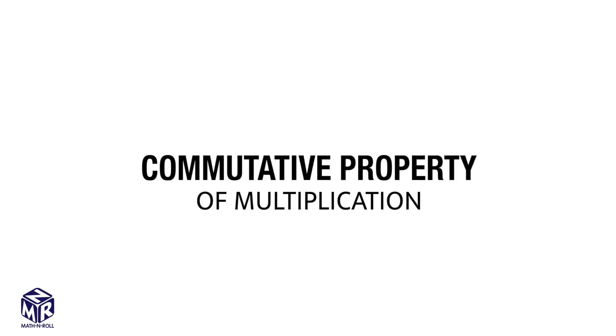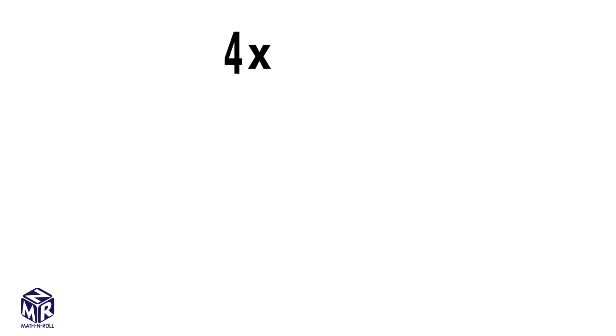The commutative property of multiplication states that you can change the order of the factors and the product stays the same.